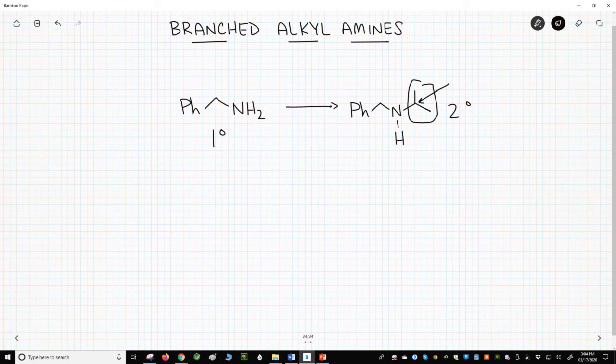You cannot introduce branched alkyl groups using the amide reduction method. That's okay. We can still react the primary amine with a ketone, make an imine, and then reduce the imine